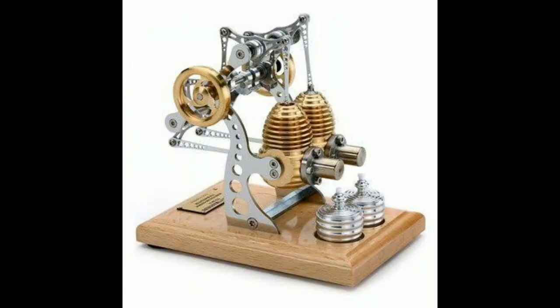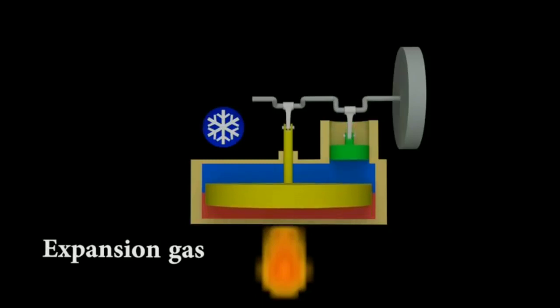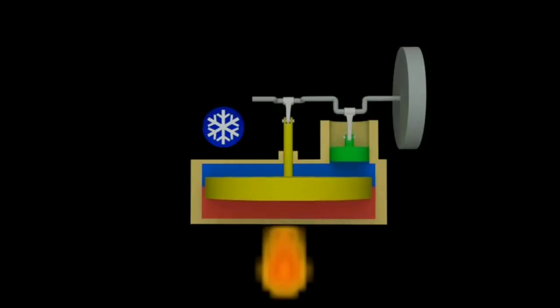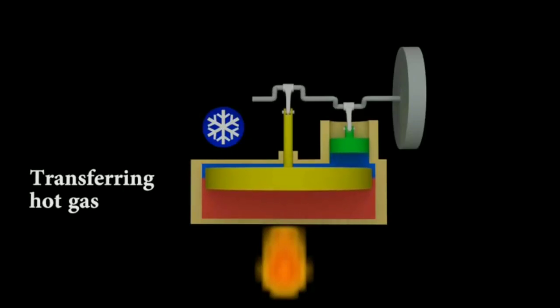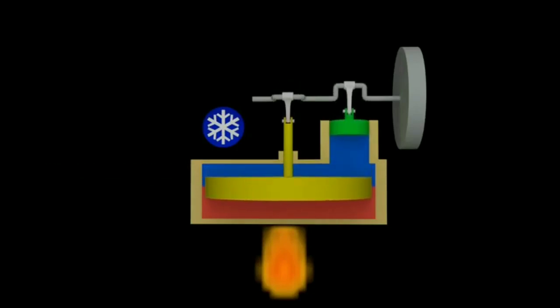This is the gamma type. The working principle is expansion and contraction. The gamma type has one cylinder with a displacer piston. This converts heat energy into mechanical energy.